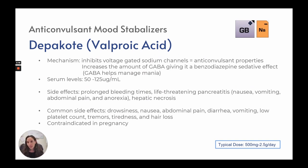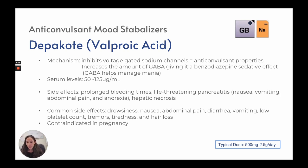Depakote is an anticonvulsant mood stabilizer that increases GABA and blocks sodium channels, giving a benzodiazepine-like sedative effect. Serum levels should be between 50 and 125. Side effects include prolonged bleeding times, life-threatening pancreatitis, nausea, vomiting, abdominal pain, anorexia, hepatic necrosis, drowsiness, diarrhea, low platelet count, tremors, tiredness, and hair loss. It is contraindicated in pregnancy. Typical dose is 500 milligrams to 2.5 grams per day.